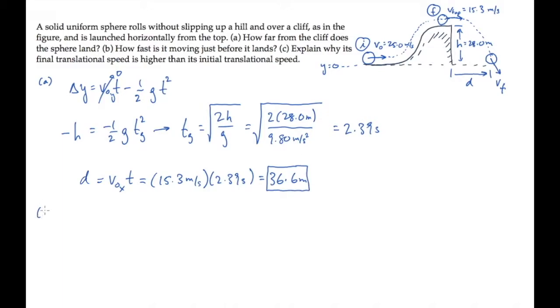Part B asks us how fast the ball is moving just before it hits the ground. That speed is the length of the final velocity vector shown here with components shown in red: an x component and a y component.